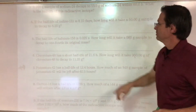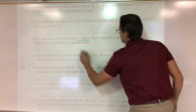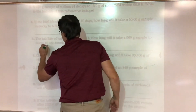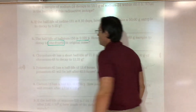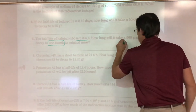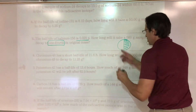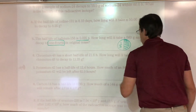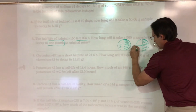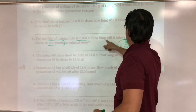Number five: half-life is 0.025 seconds. How long will it take a 560-gram sample to decay to one fourth? One fourth is the same as two half-lives. If you start with 560 grams, one half-life cuts it in half, then another half-life cuts that in half — leaving one fourth.